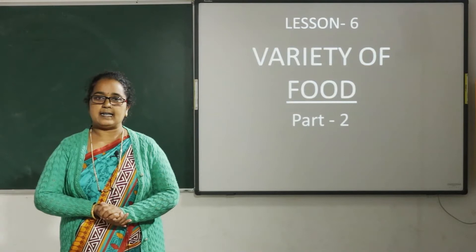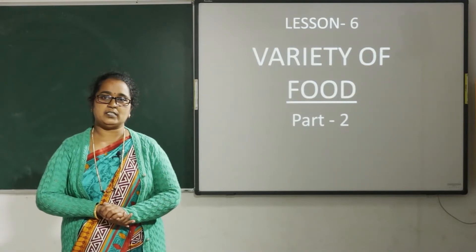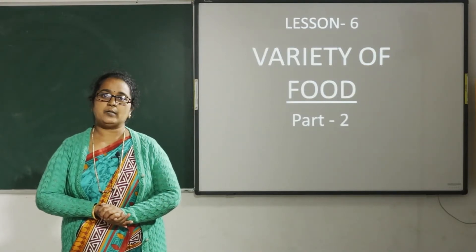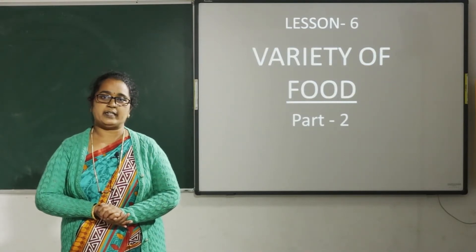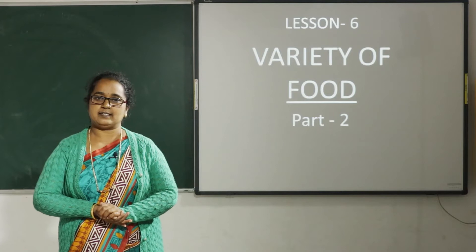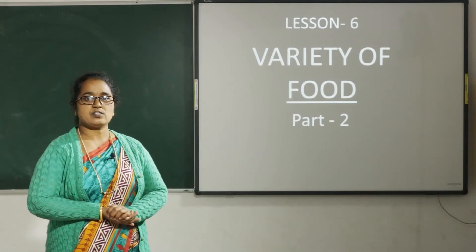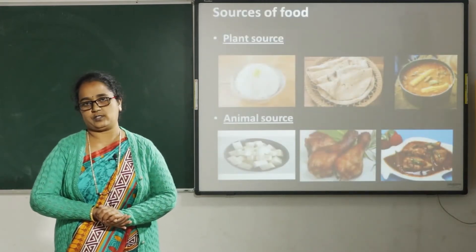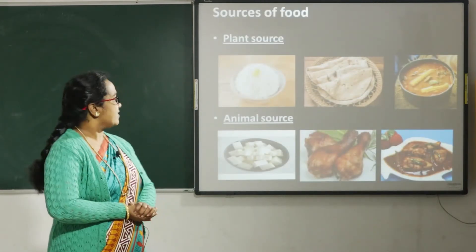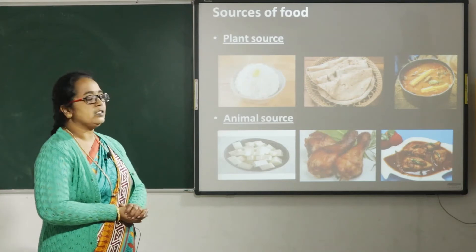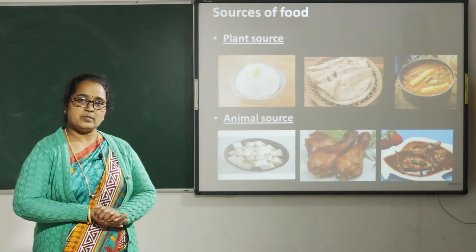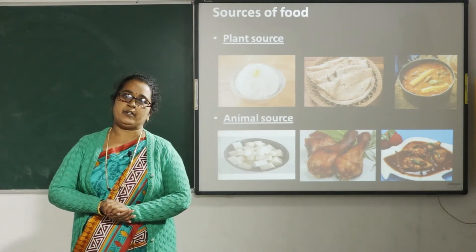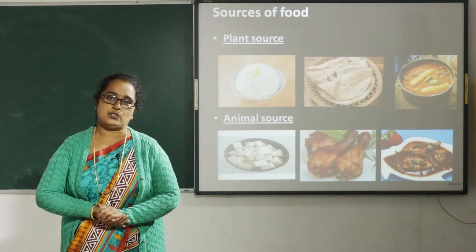Good morning children. In last class we have learnt about variety of food. Now I am going to teach you the next part of the lesson: sources of food. There are two types of food sources — one is plant source and another one is animal source. Food items are prepared from these two sources.